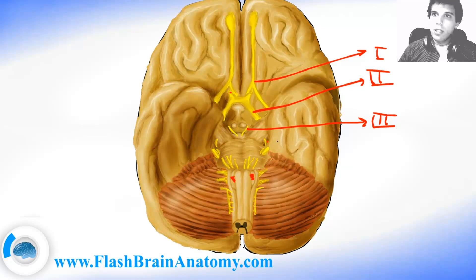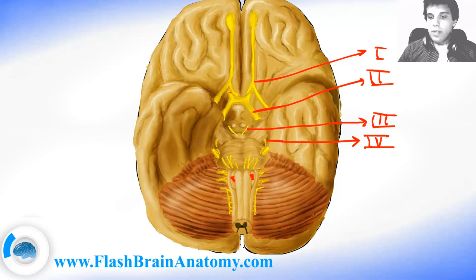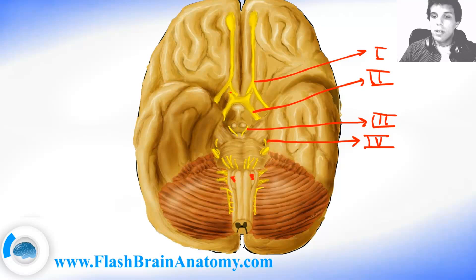Then we have cranial nerve number 4. Number 4 innervates the sphincter muscle of the pupil and also innervates the ciliary muscle in the eye.